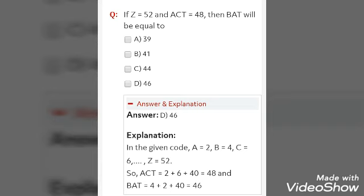First you have to take your pen and paper and start solving. The answer is 46. Now, the explanation is in the given code, if A equals 2, if we take A as 2, B as 4,